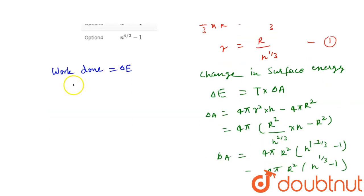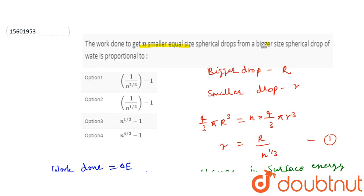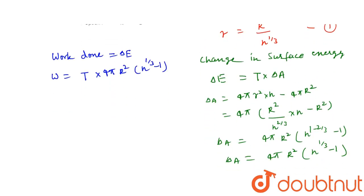Its value will be W equals surface tension T into 4 pi R square times (n to the power 1 by 3 minus 1). Now the question asks what is the proportionality in terms of n.